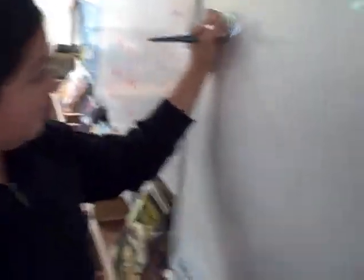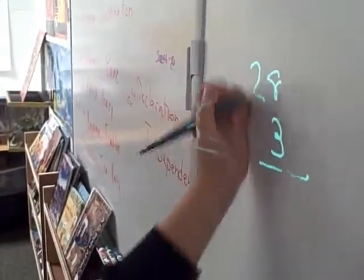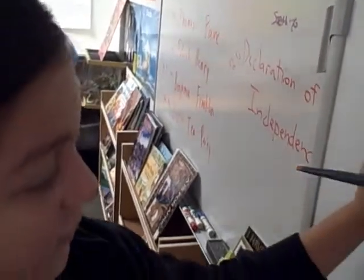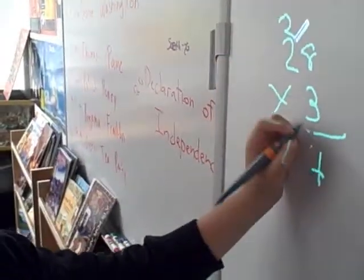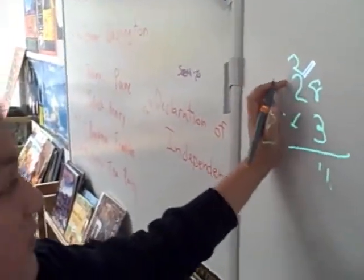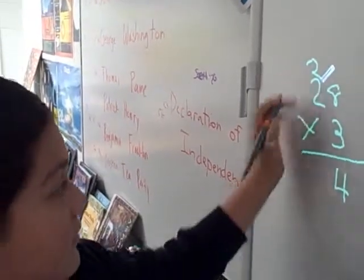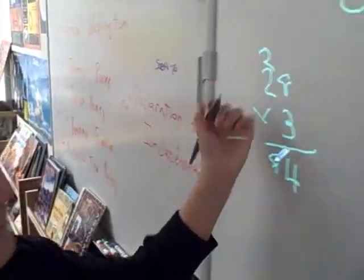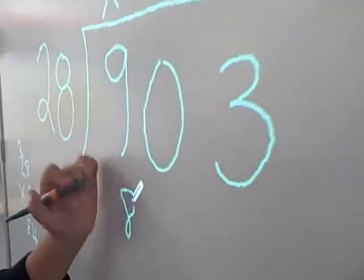And 8 times 3 is 24, and 3 times 2 plus 2 is 8, so it's 84. I did 84.